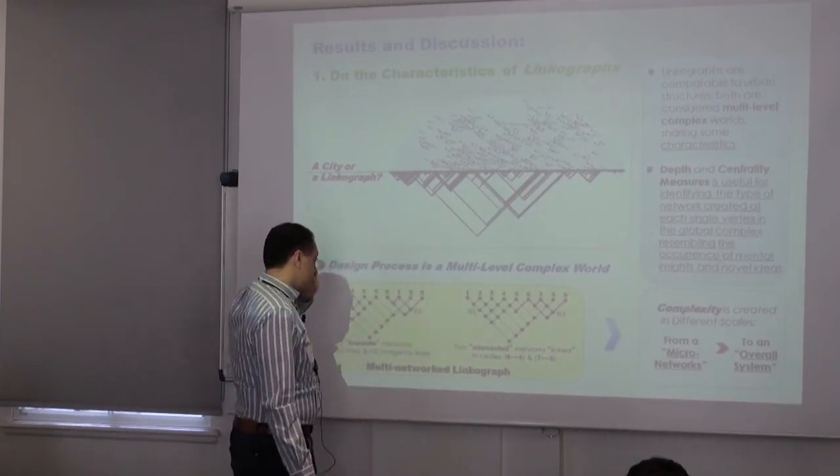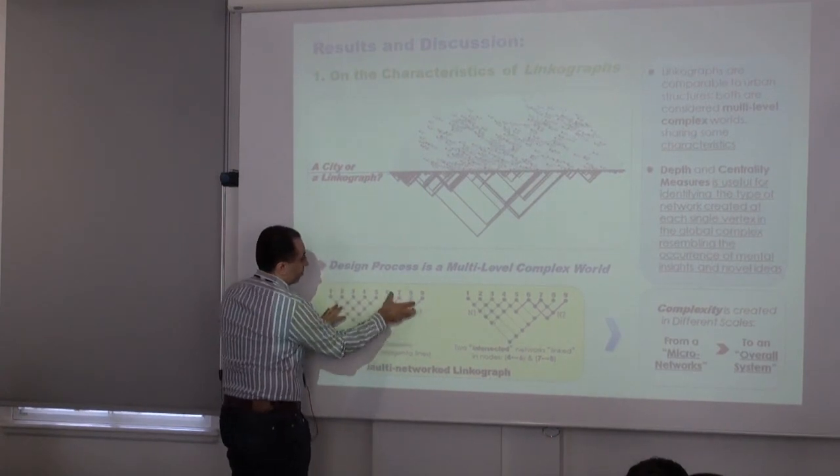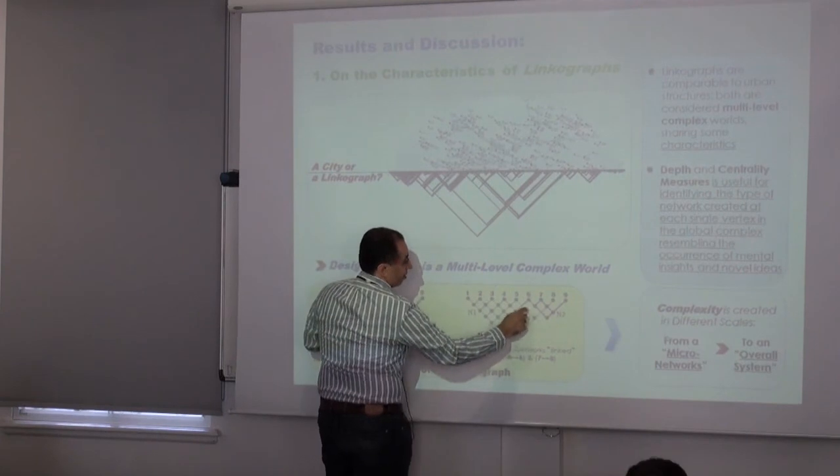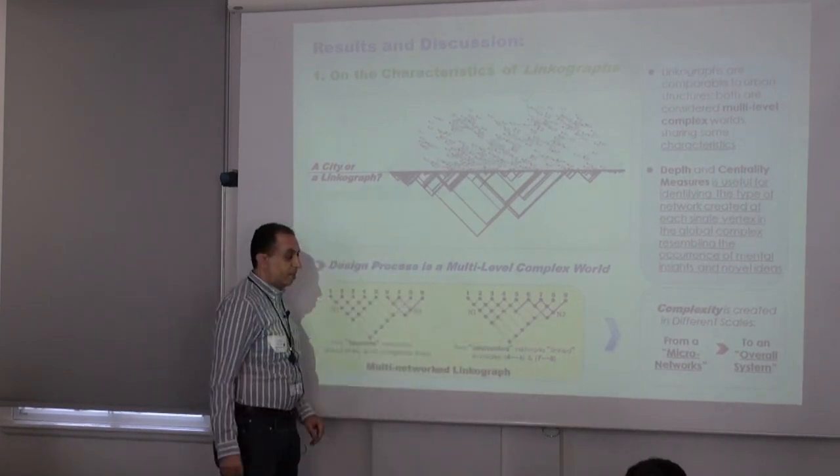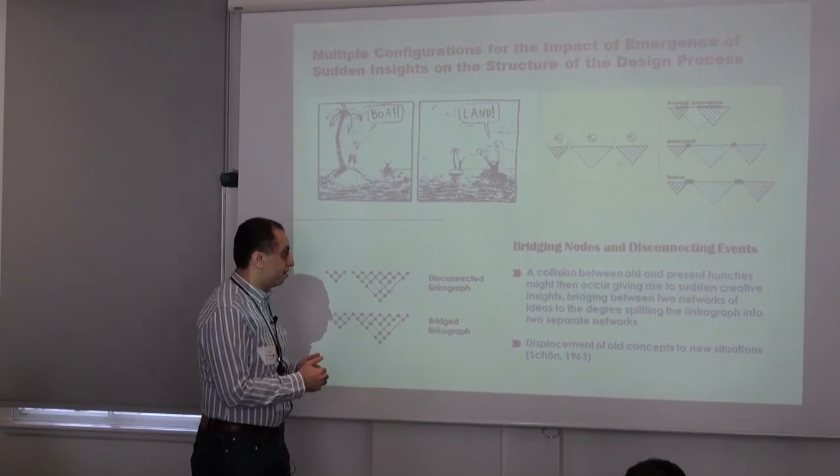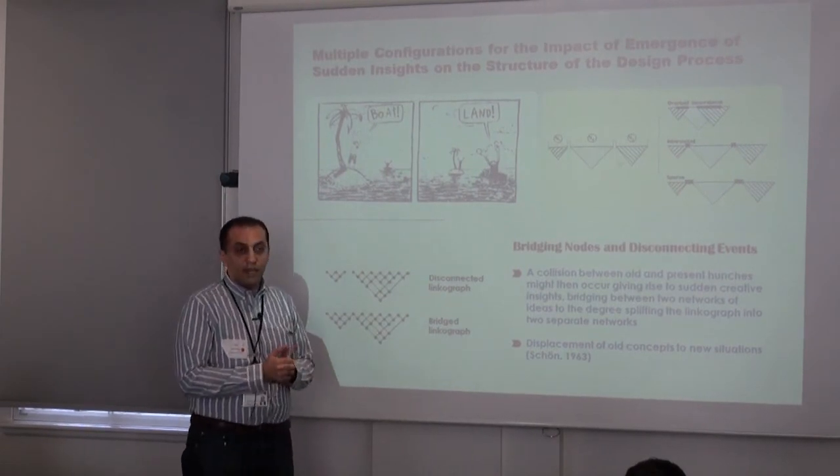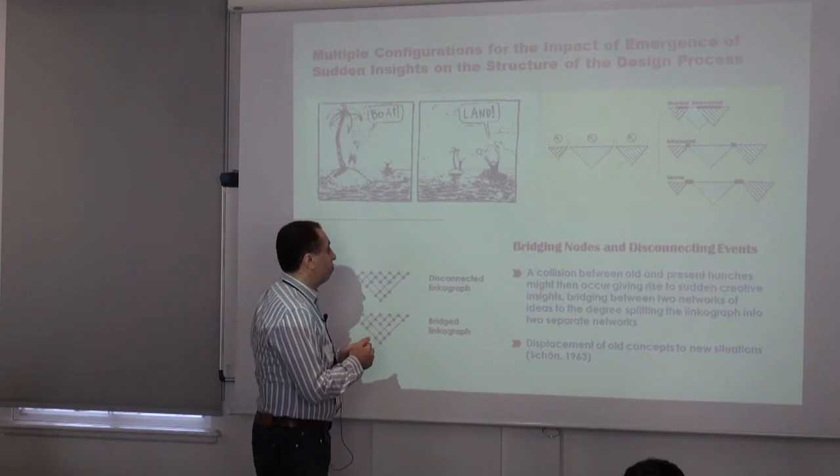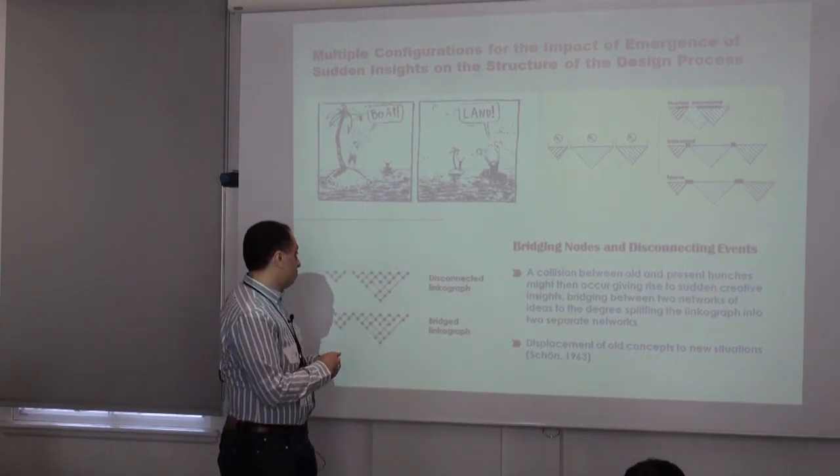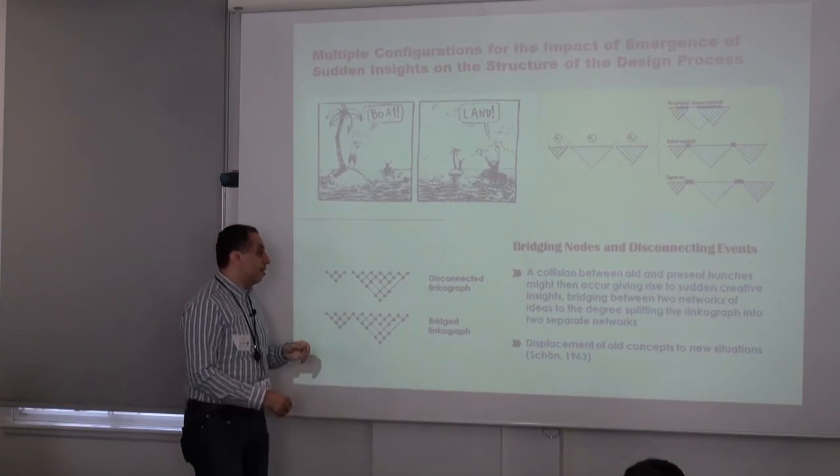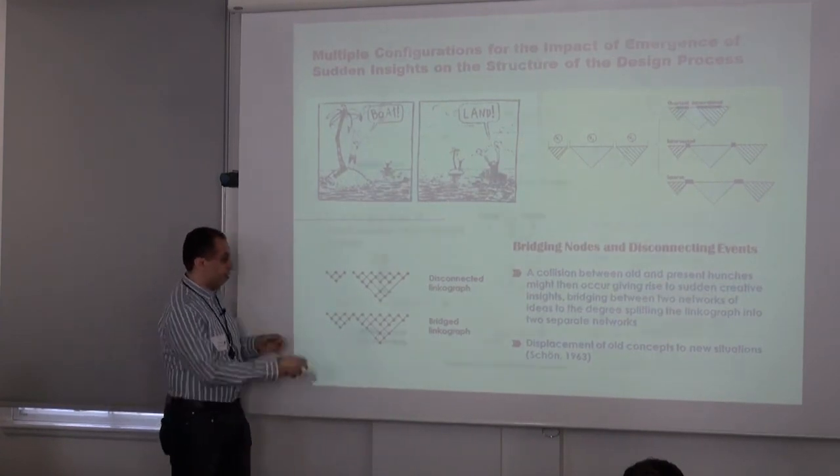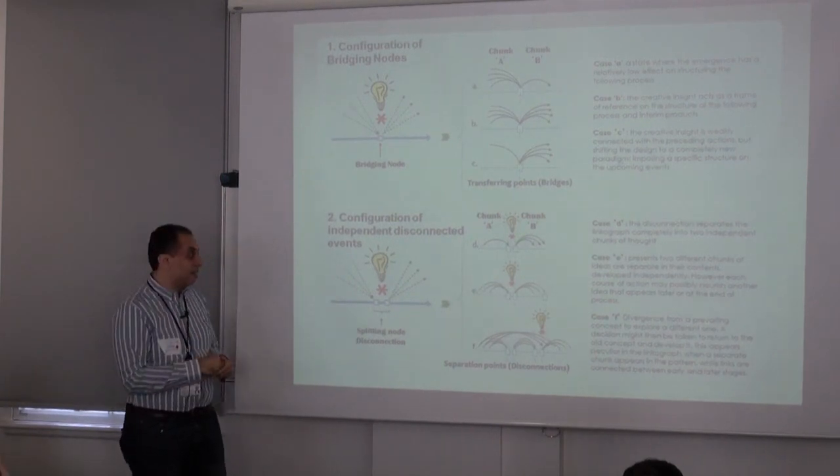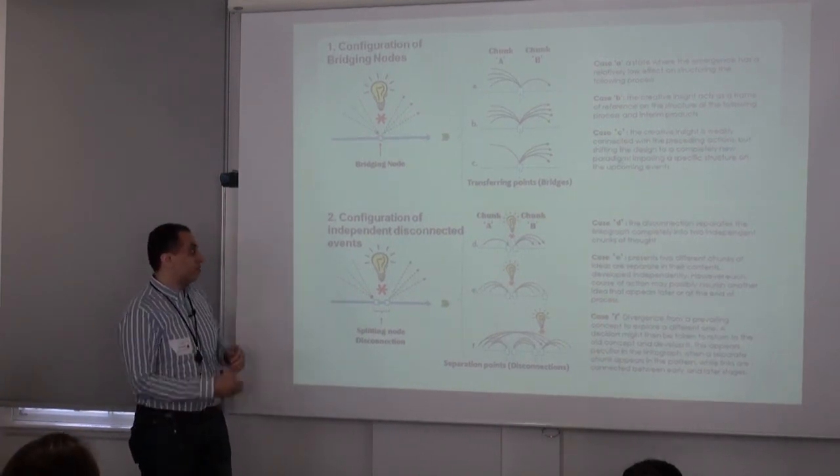We have network analysis as well and identify the relations between two different sets that might be unrelated or related—there might be connections between them. This helps us to interpret that transformation of concept through the design process. We have also configured configurations of networks and relations between chunks of ideas in the design process. We have conversions versus diversions, and divergence might disconnect the whole pattern.